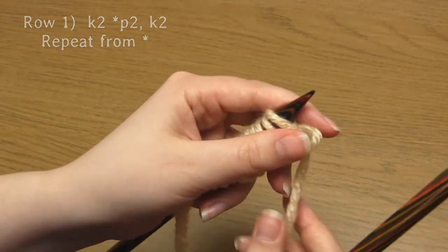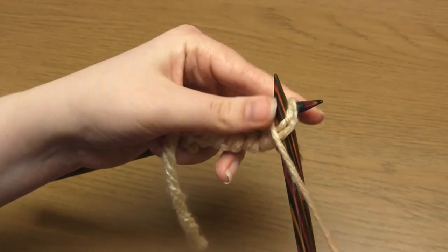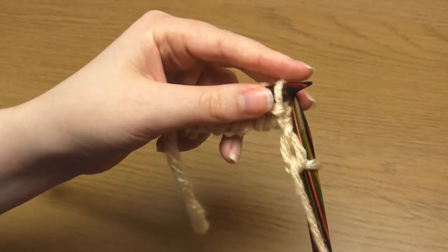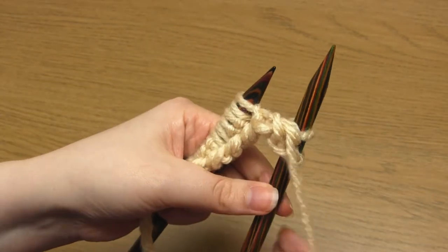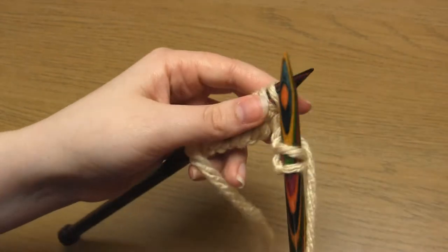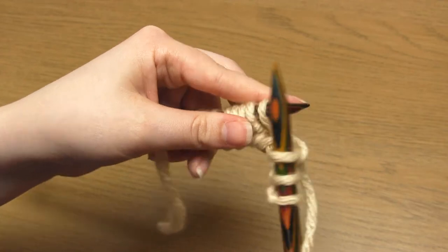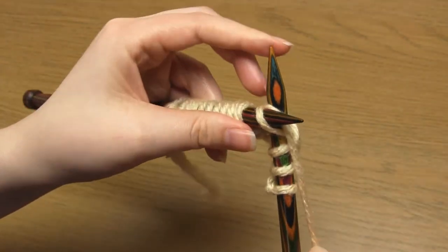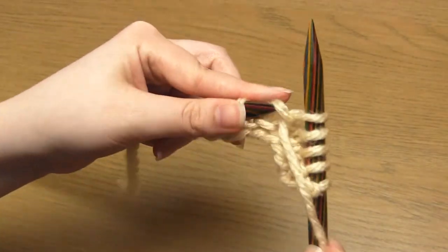Then for row two you need to begin by purling two stitches. So make sure the working yarn is at the front towards you and purl two. Then take the working yarn between the needles to the back and knit two stitches. Bring the working yarn between the needles to the front again and purl two stitches.